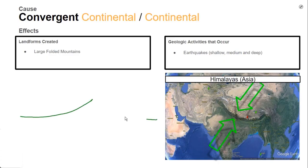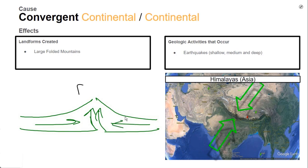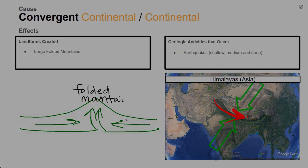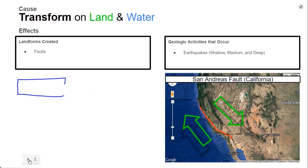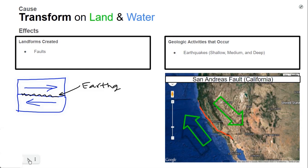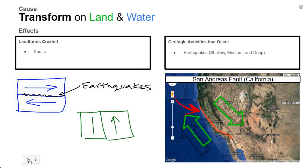When two continental crusts collide, neither subducts because neither is more dense, and the rock pushes up, creating some of the tallest mountains in the world, including Mount Everest in the Himalayas in Asia. When two plates slide past each other in opposite directions, pressure builds up and eventually releases. One of the most famous examples is the San Andreas Fault in California, where the Pacific Plate is sliding in the opposite direction as the North American Plate, causing tremendous earthquakes.